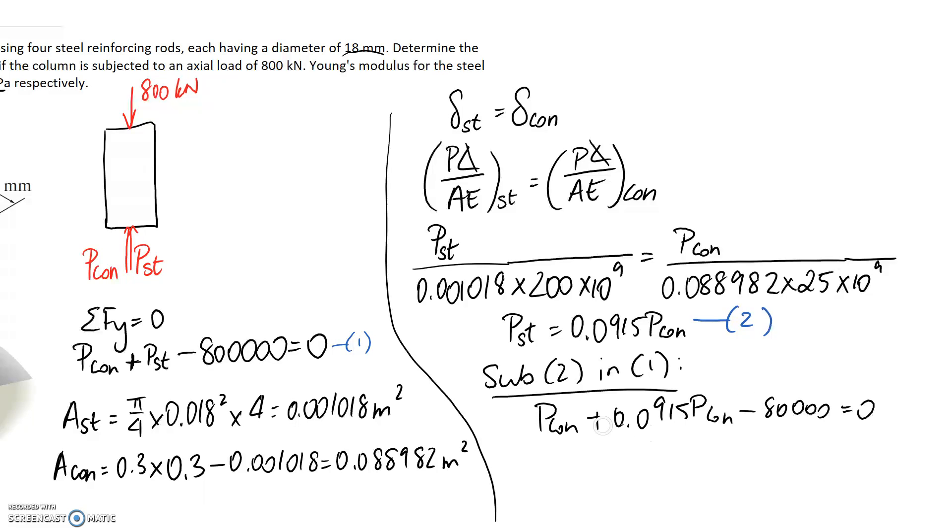Putting these two together, we get 1.0915 times the force in the concrete. And shifting this, it's 80,000. So the force in the concrete is 80,000 divided by that. And we end up with it being about 732,928.